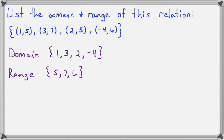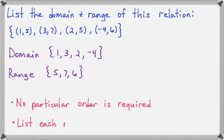And now for the range, I have 5, 7, and 6. And notice that I did not list the 5 twice, because this just needs to include all the numbers that are part of the range. It really doesn't mean anything if you put the 5 down twice, so put each number down one time. So just a reminder, no particular order is required, and we just list each number once.